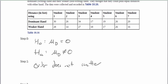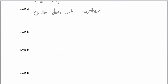Since this is a not-equal-to problem, the order doesn't matter. For step two, we can't assume normality because it wasn't stated in the problem. So we need to perform an outlier check for list one.